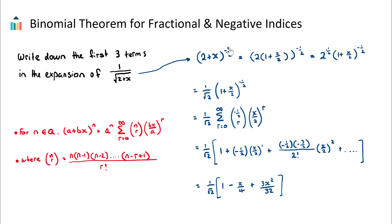For example, in this question, it's to the power of negative a half. So let's go through the steps. If we have a question like this, we want to write down the first three terms in the expansion of one over the square root of two plus x. We can firstly realize that this can be expressed as two plus x to the power of negative a half, and the goal is to find the first three terms in this expansion.